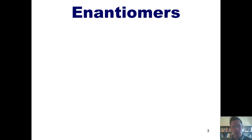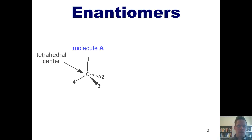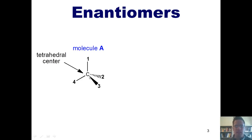So what is an enantiomer? In order to address this question, I want you to imagine that you have a molecule that has a carbon atom in it somewhere that has four separate appendages or substituents attached to that carbon atom. Each of those four appendages or substituents has to be something different — none of these four things can be the exact same.